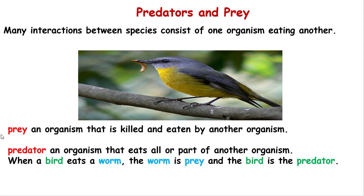Predators and prey: many interactions between species consist of one organism eating another. Prey is an organism that is killed and eaten by another organism. A predator is an organism that eats all or part of another organism. For example, when a bird eats a worm, the worm is the prey and the bird is the predator.